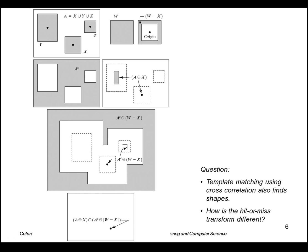It needs an exact match. Cross correlation gives you a value as to how well the shape matches, but here it's a binary value. It either matches perfectly or it doesn't match.